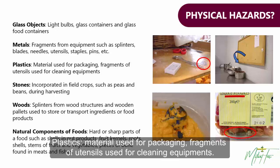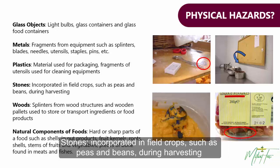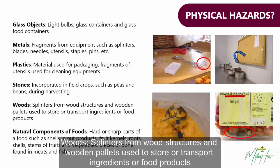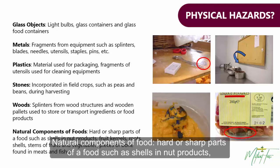Plastics — material used for packaging and fragments of utensils used for kitchen equipment. Stones incorporated in field crops such as peas and beans during harvesting. Wood splinters from wood structures and wooden pallets used to store or transport ingredients or food products.